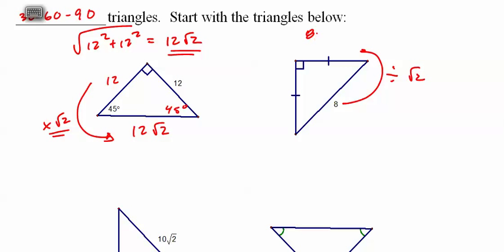You get 8 over root 2, which if you rationalize and simplify, you get 4 root 2. Of course, that's the same on that side.